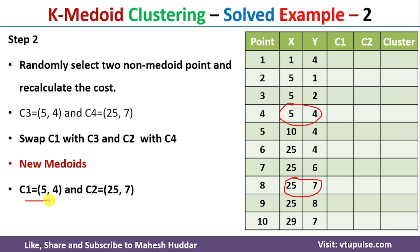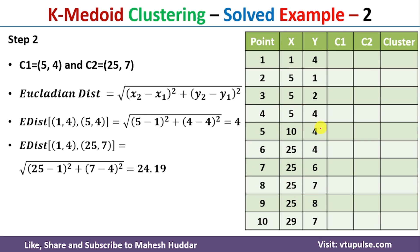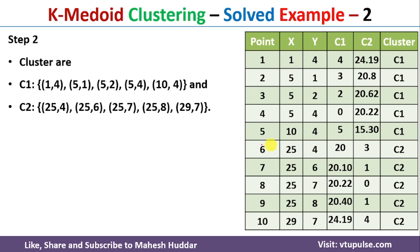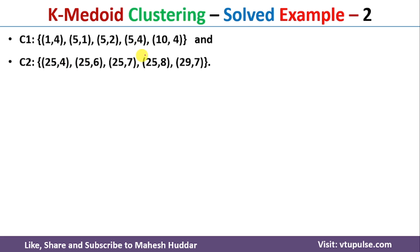Using the same procedure, we find the distance from the new C1 and C2 to all other data points, then assign each data point to the nearest cluster. In this case, the first five data points are assigned to C1 and the remaining five are assigned to C2. We then calculate the total cost of this new cluster assignment using the same formula — summing the cost from each medoid to its non-medoid points.